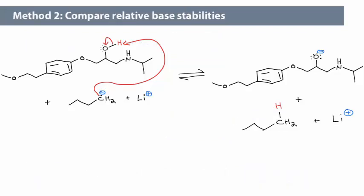Alternatively, we could use method 2 to determine the equilibrium's direction. We start out with the same preparation phase of drawing out the species, identifying the most acidic protons in the acids, and the most basic atoms in the bases.